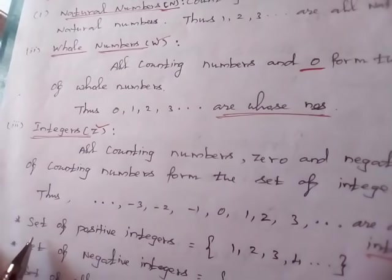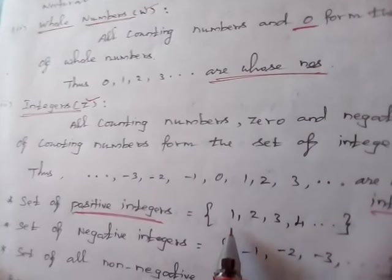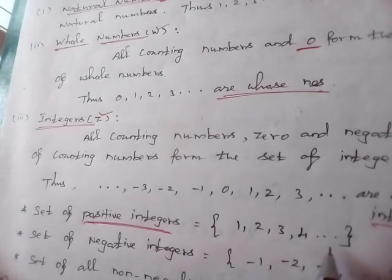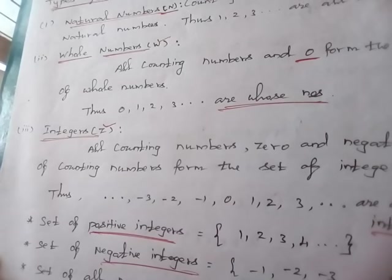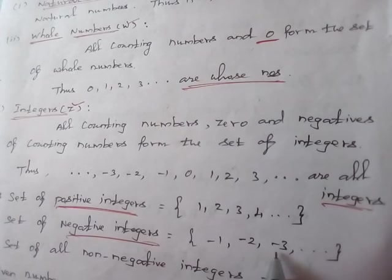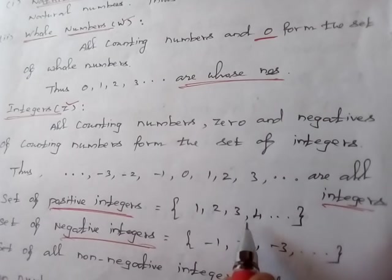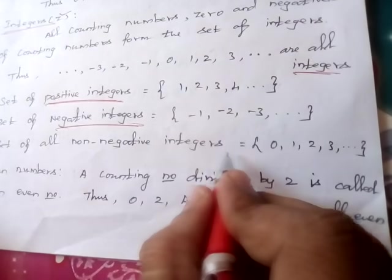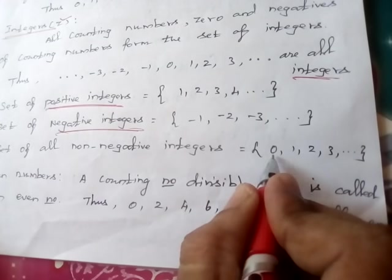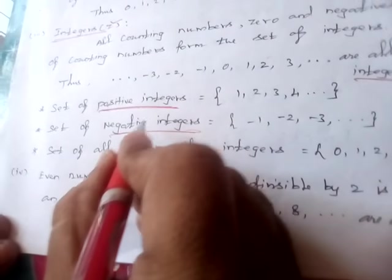There are some kinds of integers. First, the set of positive integers: 1, 2, 3, etc. Next, the set of negative integers: minus 1, minus 2, minus 3, etc. We don't know what the last value is. Similarly, the set of positive integers also goes on without a known last value. Next, the set of all non-negative integers: 0, 1, 2, 3, etc., continuing without a known last value.